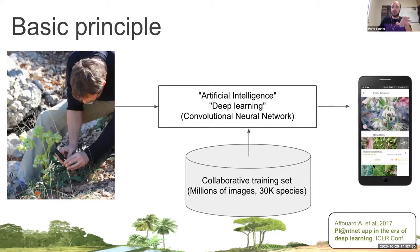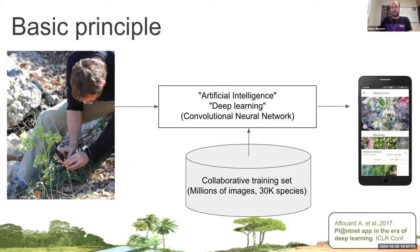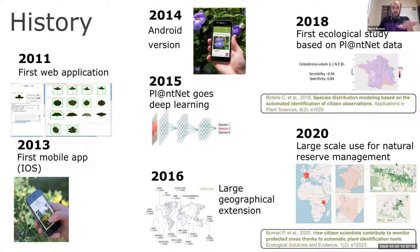The service allows a user to submit an image and receive the most probable plant species list according to the submitted image. The deep learning model proposes a species name and is regularly trained on a collaborative visual dataset containing a few million images illustrating around 30,000 plant species. The platform was initially based on a web app extended to iOS in 2013, and one year later to Android. In 2018 we conducted the first ecological study based on PlantNet data.